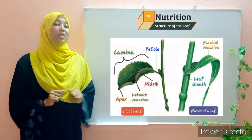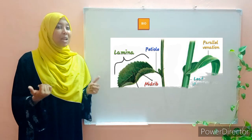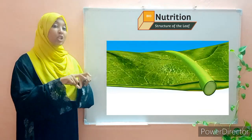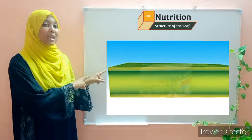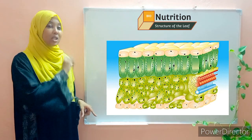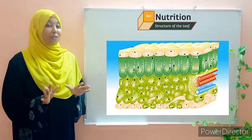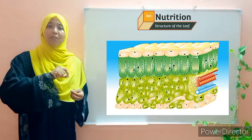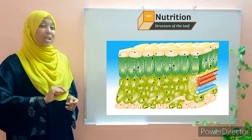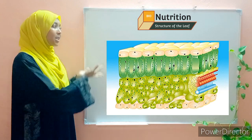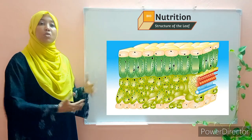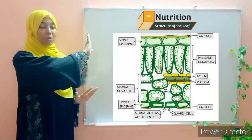Let us now proceed to the internal structure, which is the main part of our lesson. If you were to take a leaf, cut it at an angle, and observe the cross section under a powerful microscope, you would see all the different tissues present. By the end of this lesson you will know what each structure is, its function, and how it contributes to the overall functioning of the leaf.